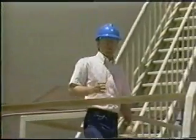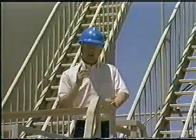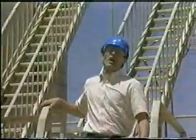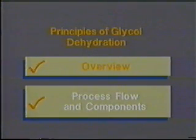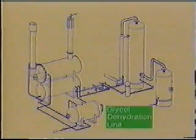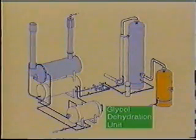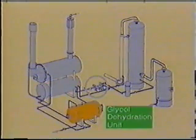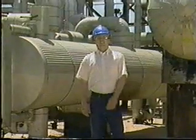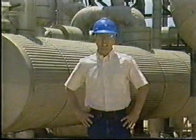In the first section, you learned the basic principles and process flow of glycol dehydration. In this section, we will discuss in greater detail the major components of a glycol dehydration facility, as well as the basic flow of gas and glycol throughout the glycol dehydration process. This is the second section of a two-section module. A typical glycol dehydration system is shown here, and it consists of the following components. Now that you've seen each of the parts, let's start at the beginning and explain how each system part functions.